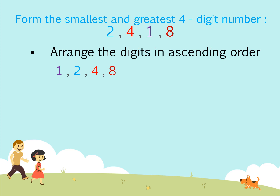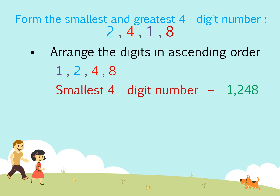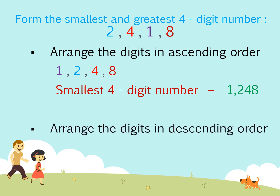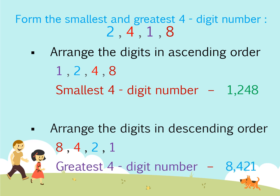Thus we get the smallest 4-digit number as 1248. Now to form the greatest number using these digits, we arrange them in decreasing order. So we arrange the digits as 8, 4, 2, 1. Here 8 is greater than 4, 4 is greater than 2, and 2 is greater than 1. Thus we get the greatest 4-digit number as 8421.